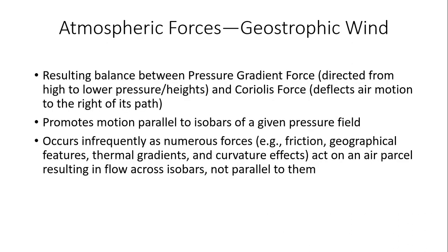Another force to consider — which is really more of a balance of forces — is the geostrophic wind. A geostrophic wind results from the balance between the pressure gradient force, directed from high to lower pressure, and the Coriolis force, which deflects air motion to the right of its intended path in the Northern Hemisphere. The geostrophic wind blows parallel to the isobars or height contours of a given pressure field. On upper-level charts, this means the wind blows parallel to the solid height contours.